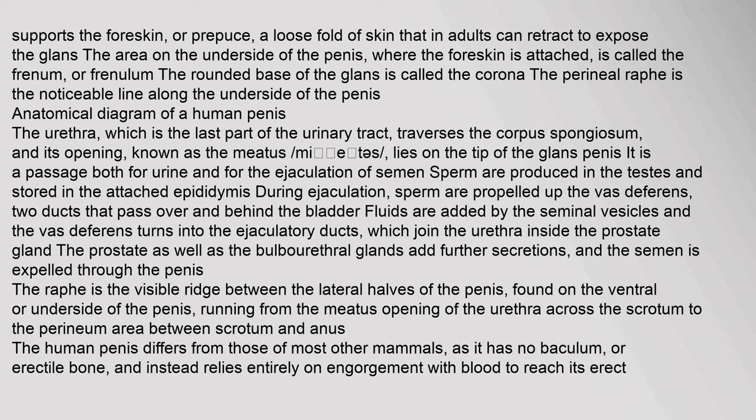The rounded base of the glans is called the corona. The perineal raphe is the noticeable line along the underside of the penis. The urethra, which is the last part of the urinary tract, traverses the corpus spongiosum, and its opening known as the meatus lies on the tip of the glans penis. It is a passage both for urine and for the ejaculation of semen. Sperm are produced in the testes and stored in the attached epididymis.